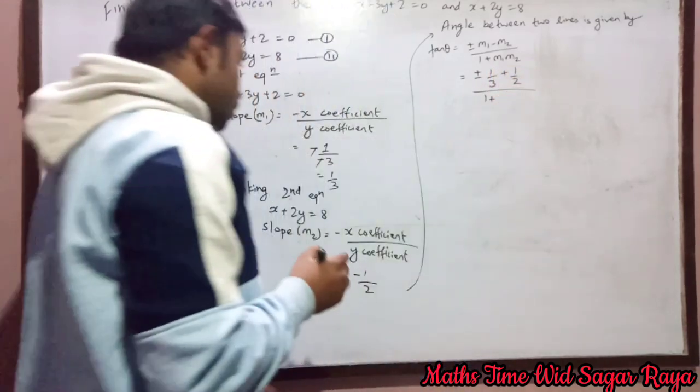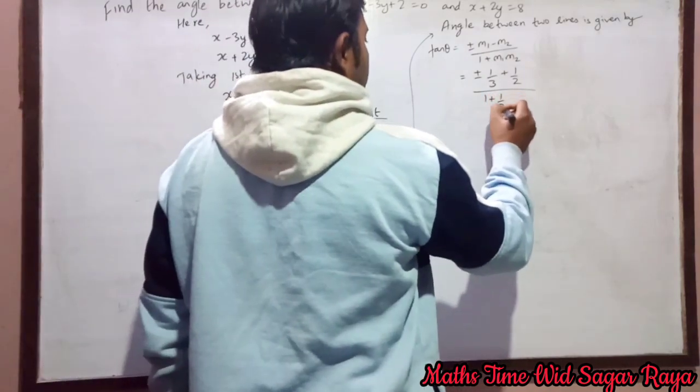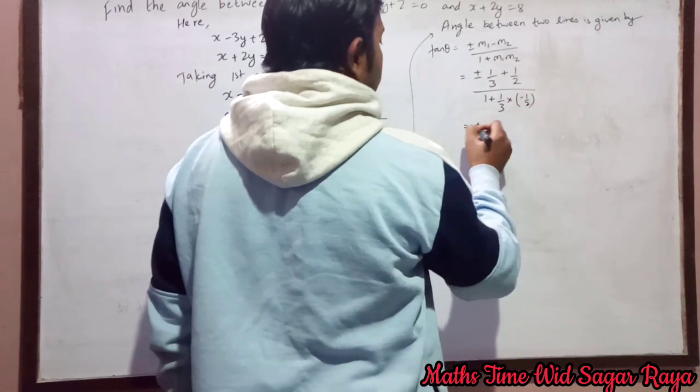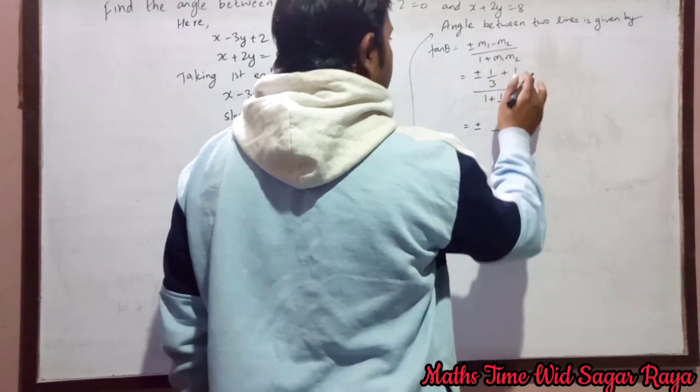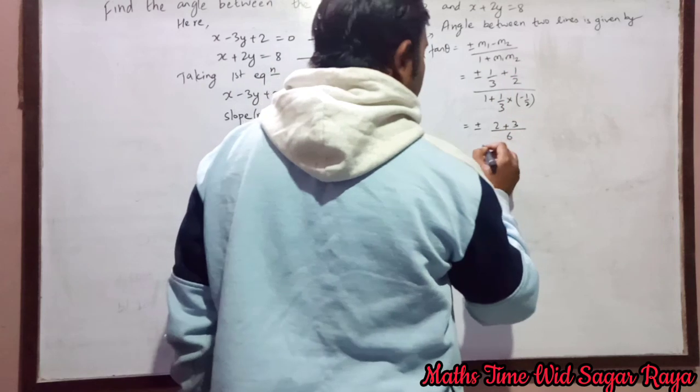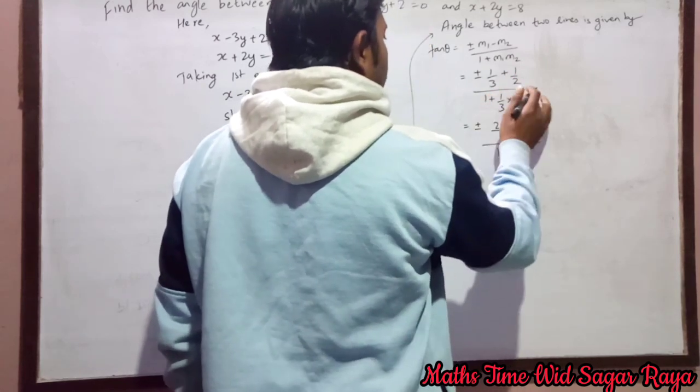1 plus m1 dot m2 means 1 by 3 into minus 1 by 2. And here it will be plus 1 and here it will be minus 1 and here it will be 6.